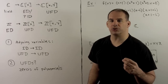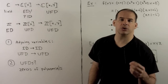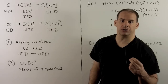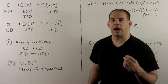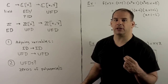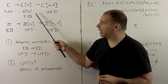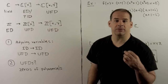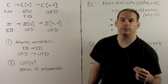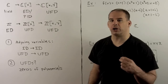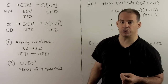We move from working with polynomials over fields to polynomials over a general integral domain. When we work with polynomials over a field, we get a polynomial ring as a Euclidean domain, and we have some very nice strong results. In general, our results aren't going to be as strong, but they'll still be very useful.